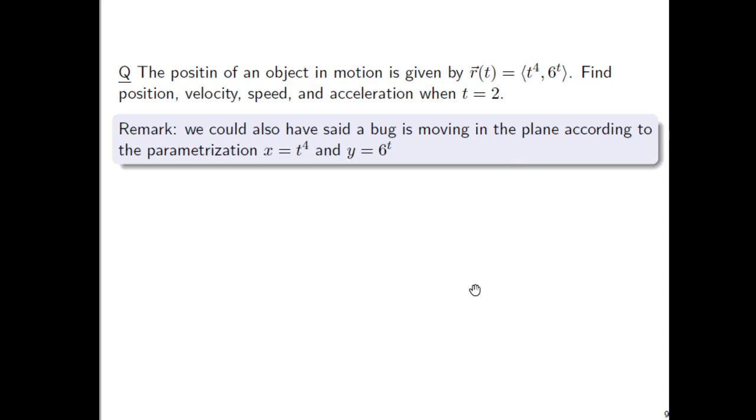We could have also said a bug is moving in the plane according to the parametrization x equals t to the fourth and y equals 6 to the t. So, position at time t equals 2? Well, just go to the vector function and plug in 2 for the t's.